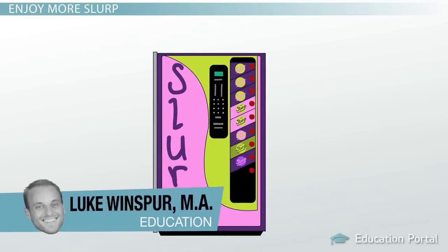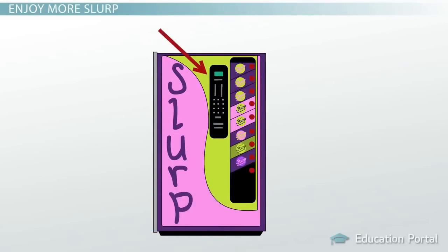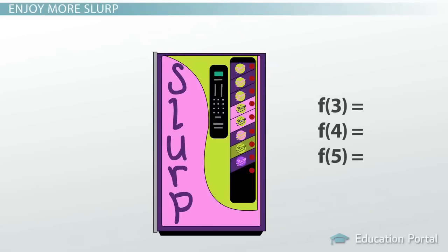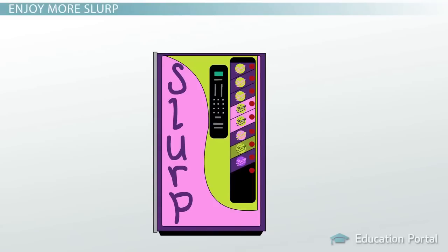Earlier, we talked about how a function is like a soda machine. By putting in different combinations of money, the inputs, you can get out different kinds of soda, the outputs. Mathematical functions are basically the same — you can input different numbers and get new numbers back out. But there is one aspect of functions that hasn't been talked about yet: domain and range.